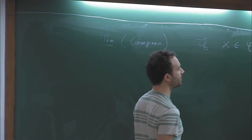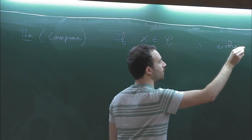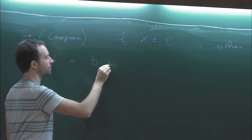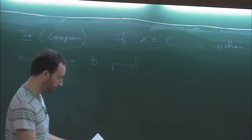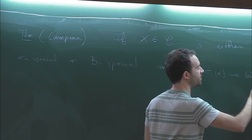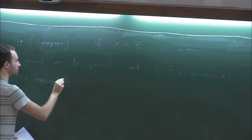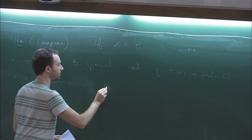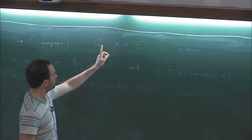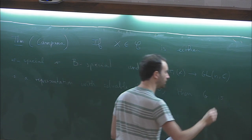So you take as usual a compact complex manifold X in class C, which is either weakly special or broadly special. If you consider a representation of its fundamental group in GL_n(C) and you ask that it has a solvable image, then because the variety is special in one of these senses, the image G will be necessarily virtually abelian.